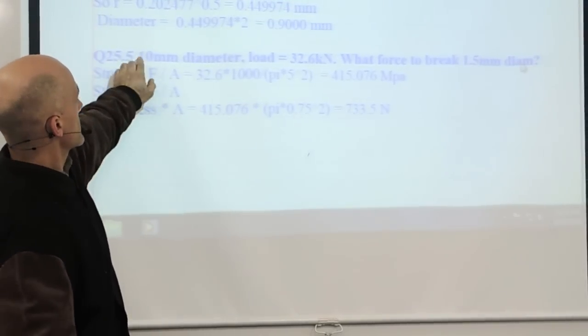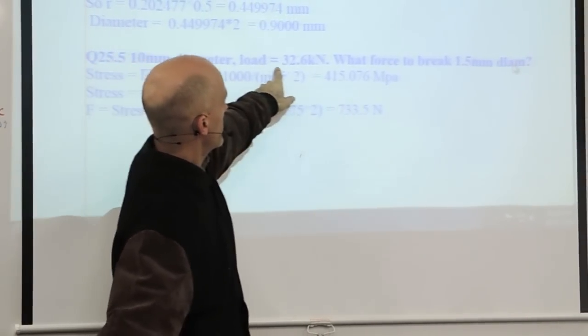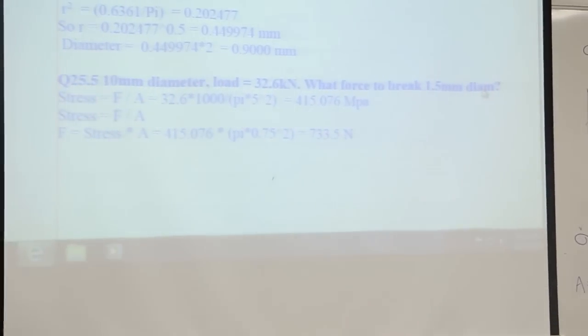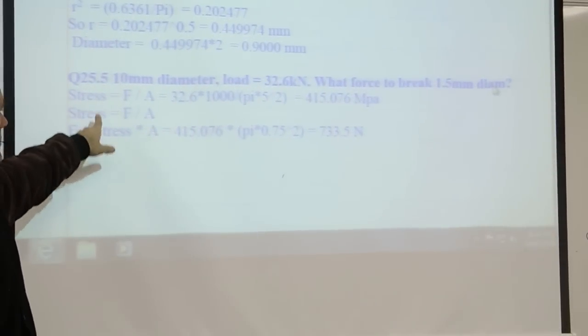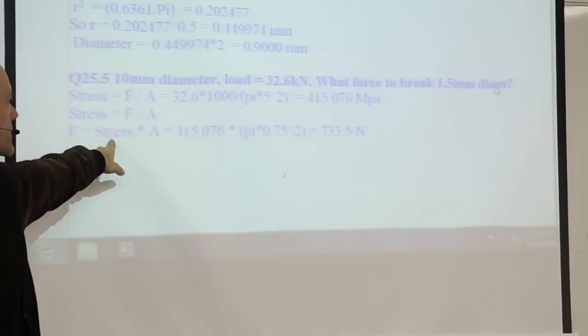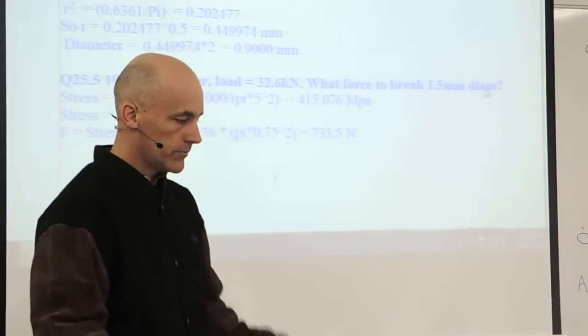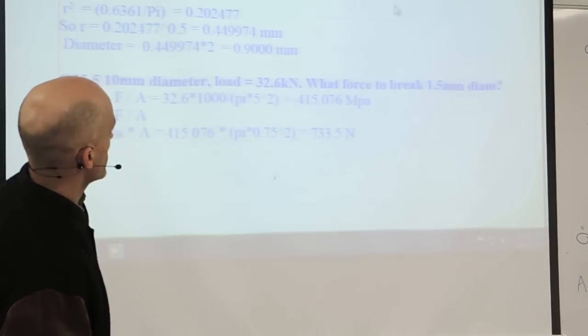So these questions can be asked forwards, backwards, working out areas, working out stresses, or working out forces. All right, this is the third way we can do it. This time we've got our diameter, we've got our load, and we're trying to work out how much force it will take to break it. So you switch the formula around, work out force equals stress times area, and you get 700 newtons. All right, simple formula. We can ask any of those types of questions.